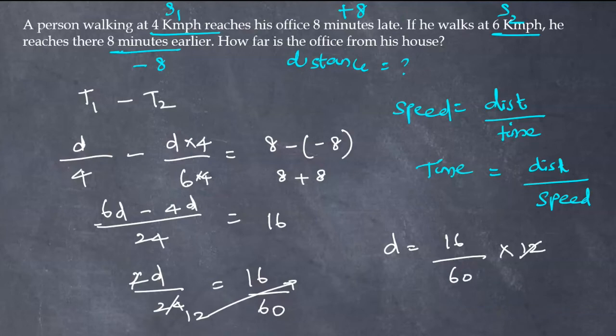When we simplify this, we get 12, 5 times 60, and 16 by 5. This can be written as 5, 3 times is 15, 1 by 5, or this can be written as 3.2 kilometer. Distance between house and office is 3.2 kilometer.